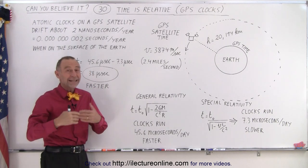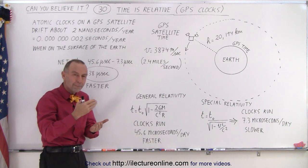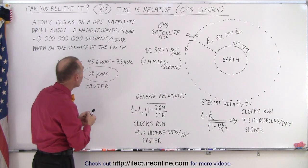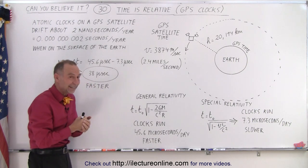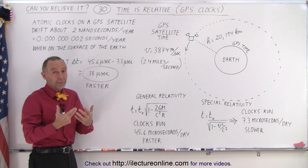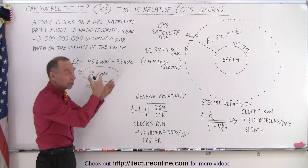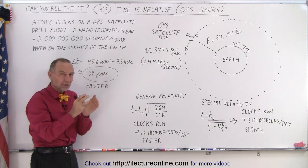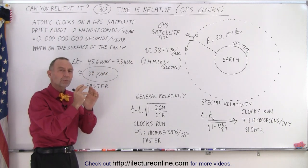An atomic clock left on the Earth's surface drifts about two nanoseconds in an entire year. And a nanosecond is one billionth of a second. So essentially, two billionths of a second in a year, that's how much they deviate from the actual time. So we can expect when we put those atomic clocks in the satellite, that they would keep almost perfect time.